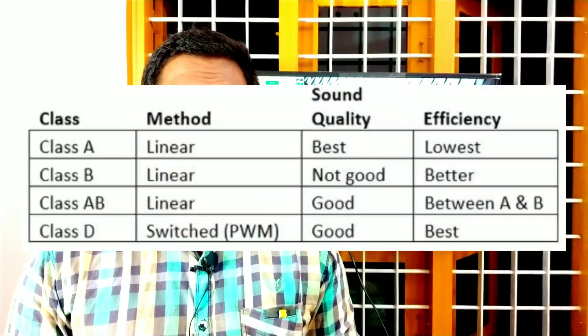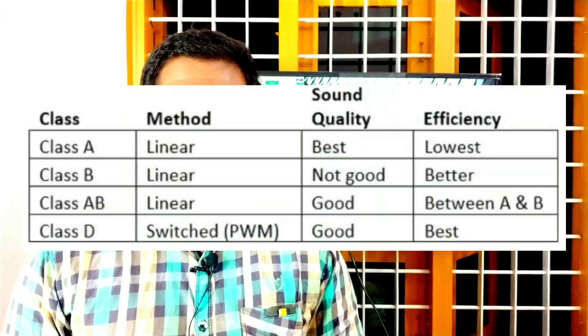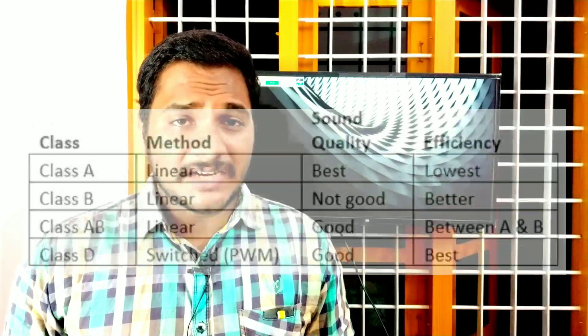Friends, if you are working with amplifiers, you will be using the efficiency of that. You will be using the same class as well. Class A, Class B, Class A and Class D — we are using these classes.